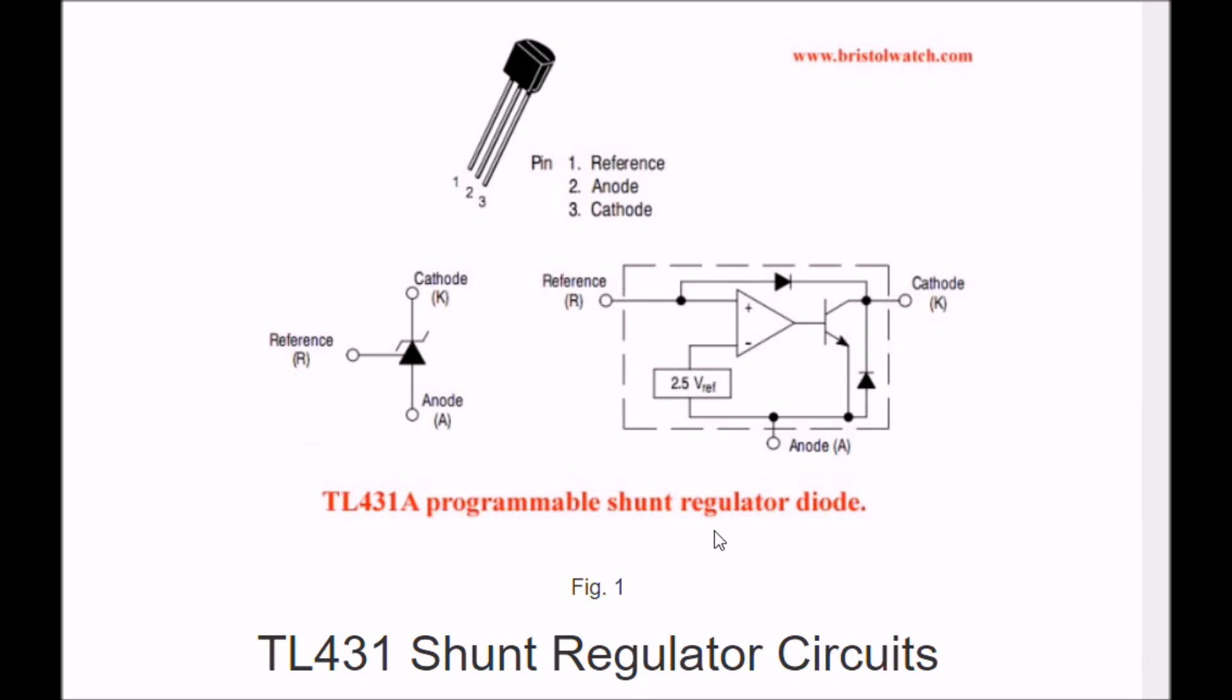Now, I'll describe how to use a TL431 shunt regulator to act as a high-powered shunt regulator in conjunction with a transistor. Briefly again, the TL431 is a 3-pin device. Through a voltage divider, it can act as a sort of variable zener diode or variable shunt current source.